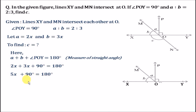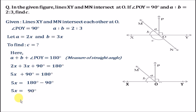We will shift 90 to the right, so 5x equals 180 degrees minus 90 degrees, which gives us 5x equals 90 degrees. Dividing both sides by 5, x equals 90 divided by 5, so we get the value of x as 18 degrees.